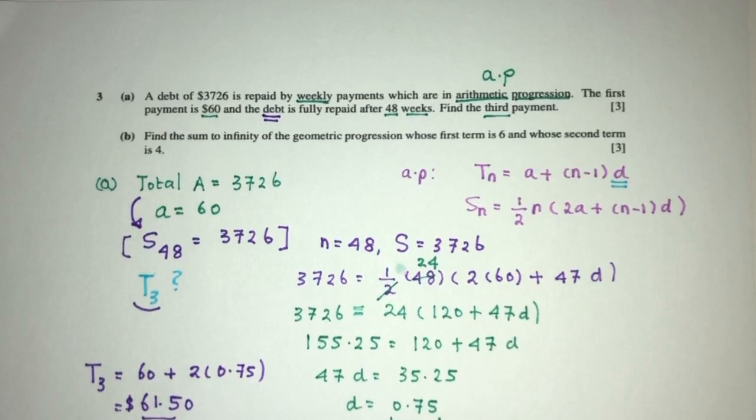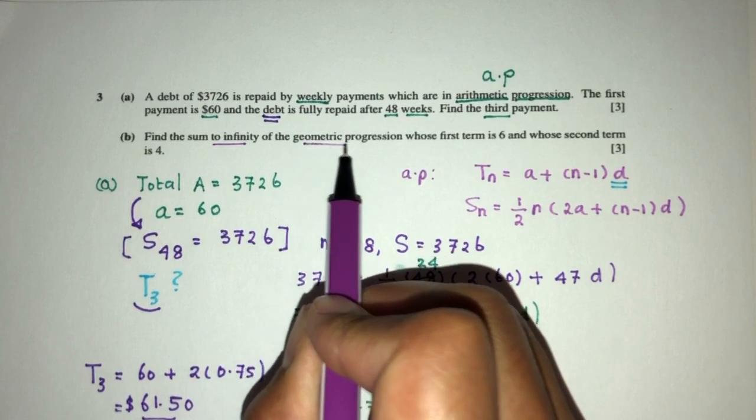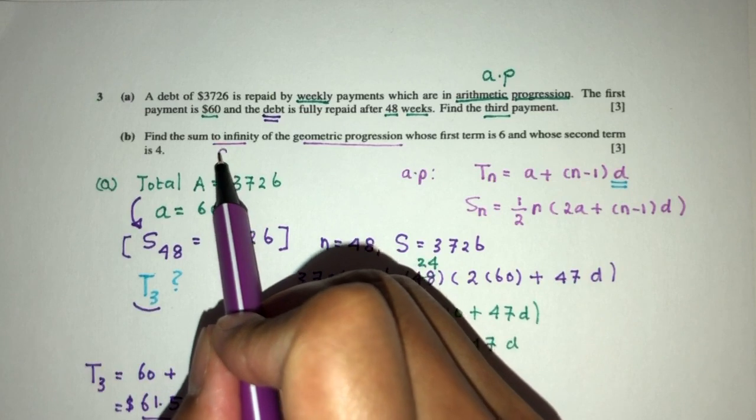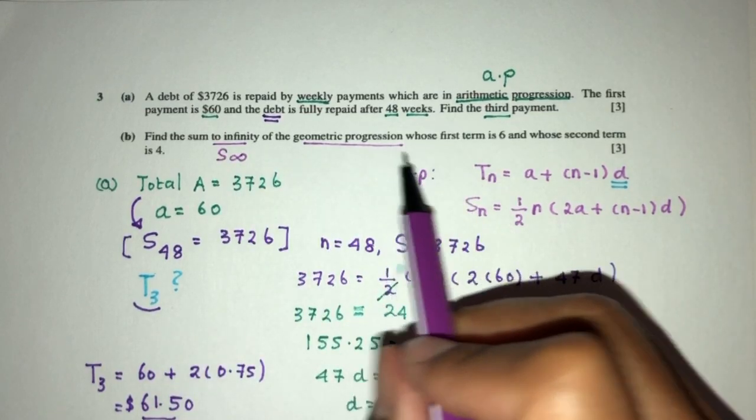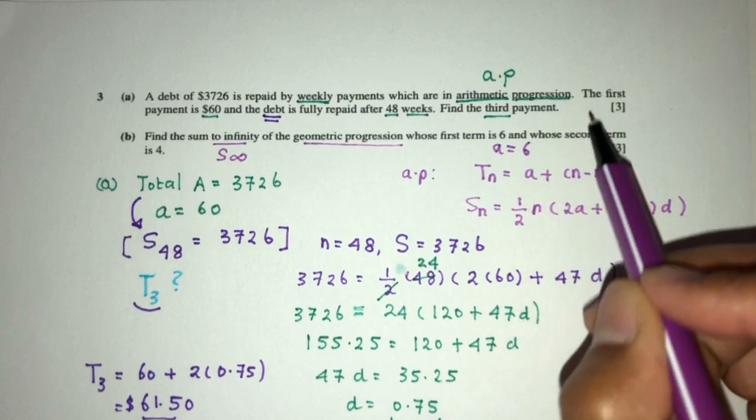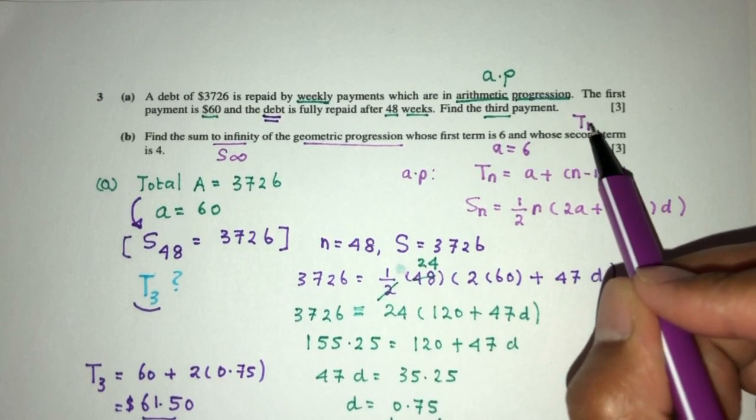Now, for part 2, we have to find the sum to infinity of the geometric progression. So now we know the kind of progression we are dealing with, which is very good. Now we can know exactly which formulas we'll be using for that. Now, we have to find the sum to infinity of this progression, whose first term is 6 and whose second term is 4. Second term is, we have to know,